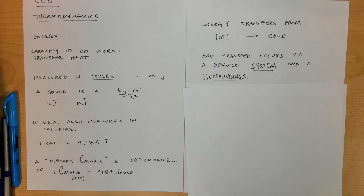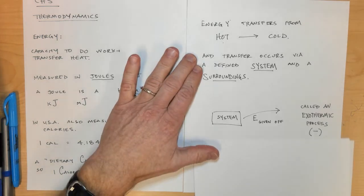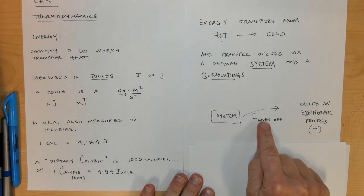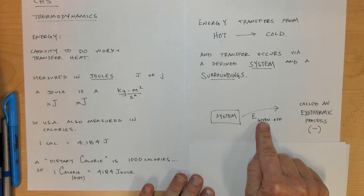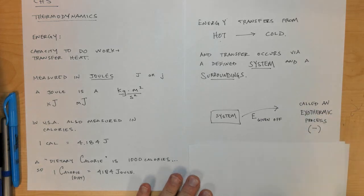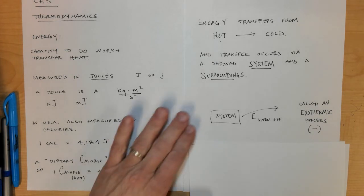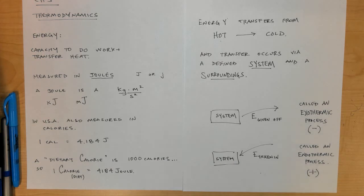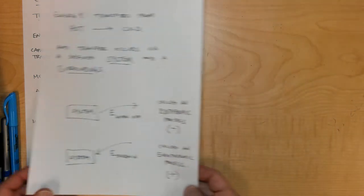When energy is given off from the system to the surroundings, it is called an exothermic process and numerically is given a negative number. When energy is taken into the system, it is called an endothermic process and has a positive value.